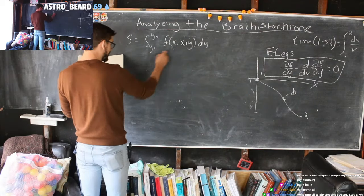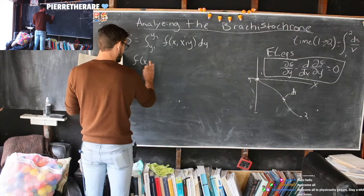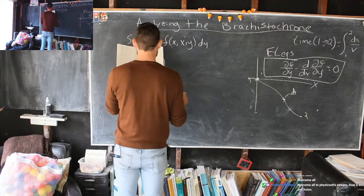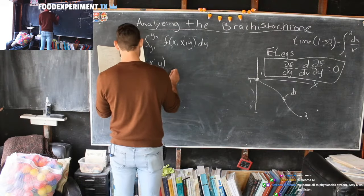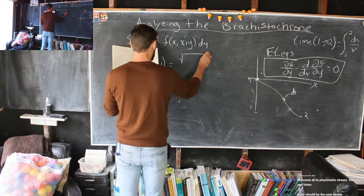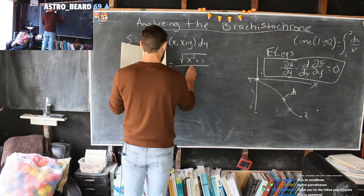This function, now remember, the procedure was to evaluate the function, evaluate the derivatives, and then solve the differential equation. And then, so first we have to establish what the function is. This function itself is equal to X prime squared plus one divided by the square root of Y. And that was the function.